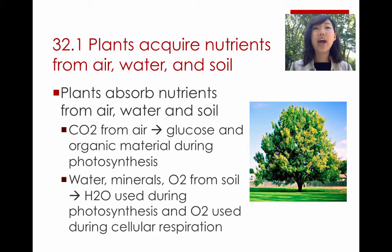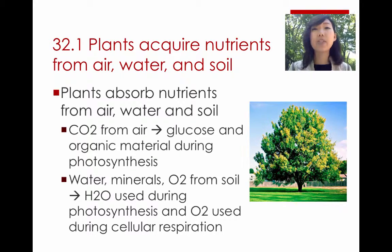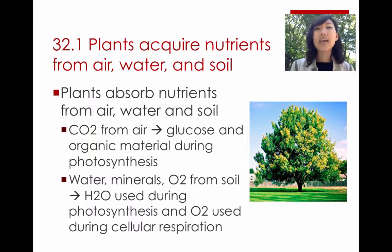First question: how do plants get the materials that they need to produce food and to survive? Mainly they acquire their nutrients from air, water, and soil. From the air, the most important thing that they incorporate into their system is CO2. They use CO2 for the process of photosynthesis in order to make organic material and also to make glucose for them to survive.